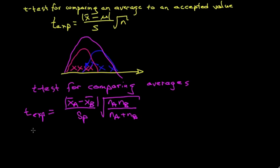S sub P is special in this case. It's a pooled standard deviation. That means that it's a weighted average of the two standard deviations of the two sets. So S sub P is calculated by taking the variance for set A, multiplying by the number of degrees of freedom in that set. So that's a weighting factor. And we give the same term for the second set.